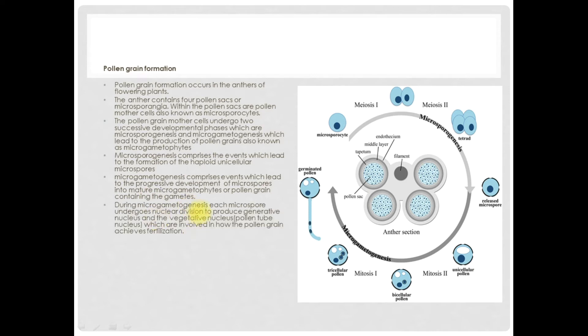During microgametogenesis, each microspore undergoes nuclear division to produce a generative nucleus and the vegetative nucleus, which is also known as the pollen tube nucleus, which are involved in how pollen grain achieves fertilization.